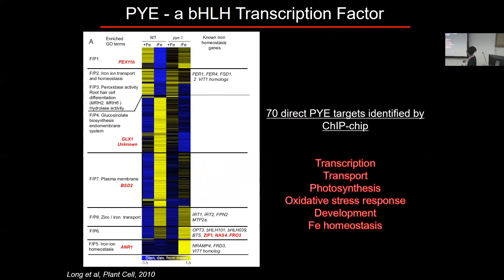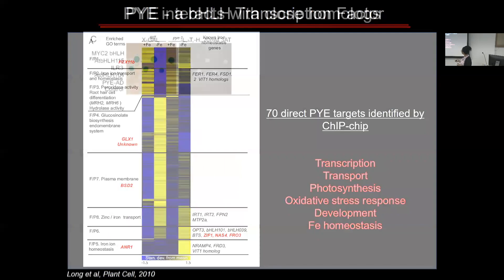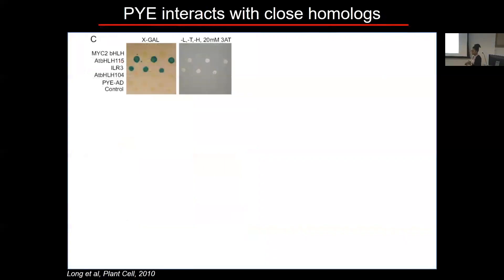We then did ChIP-chip analysis, which allowed us to identify direct targets. We found that Popeye directly regulates genes involved in not only iron homeostasis but a variety of other processes. Knowing that Popeye is a bHLH protein, and that most bHLH proteins form heterodimers with other bHLH proteins, we conducted a directed yeast two-hybrid analysis looking at Popeye homologues, finding that it interacts with several group IVc bHLH proteins, including ILR3.